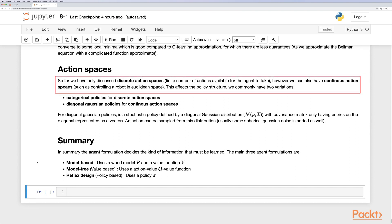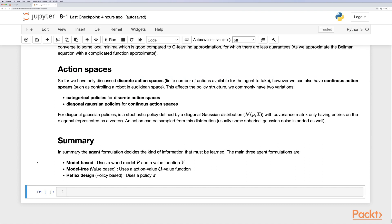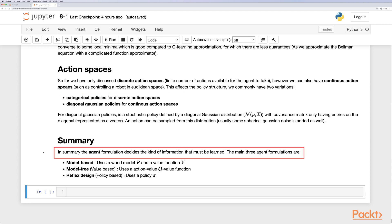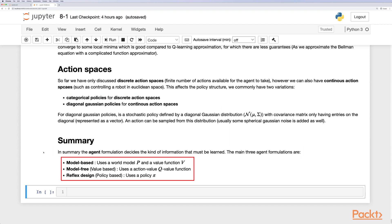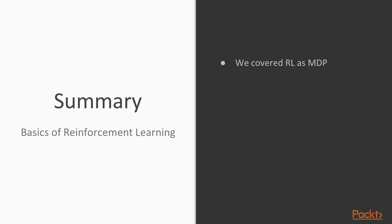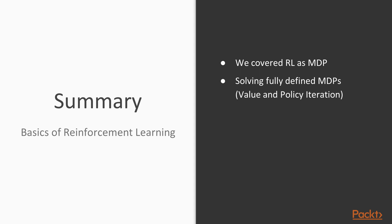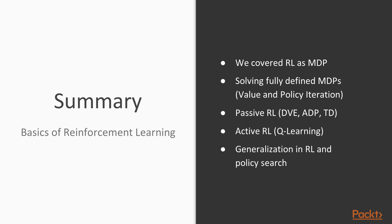So far we've discussed discrete action spaces, but we can also have continuous action spaces. We represent discrete actions with categorical policies and continuous actions with diagonal Gaussian policies. To summarize: the agent formulation decides the kind of information that must be learned. The three main agent formulations are: model-based (uses a world model p and a value function), model-free value-based (uses an action-value Q-function), and policy-based (uses a policy). We've covered reinforcement learning as a Markov decision process, value and policy iteration, passive RL (direct value estimation, ADP, temporal difference), active RL with Q-learning, generalization in reinforcement learning, and policy search.